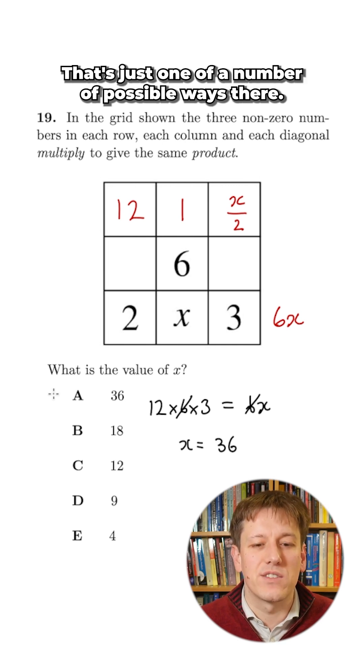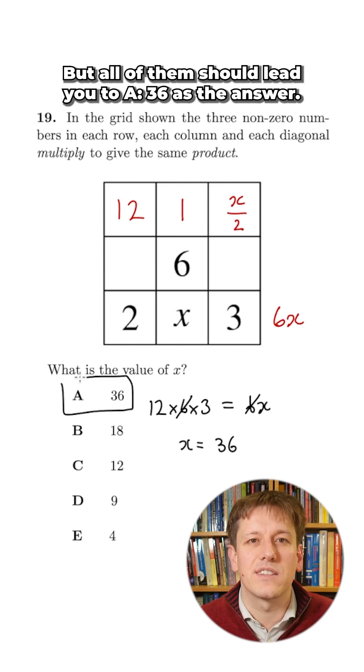There would be other routes to get to x as well. That's just one of a number of possible ways there, but all of them should lead you to 36 as the answer.